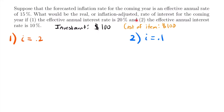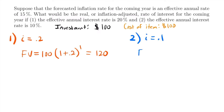We'll first accumulate interest on our investment in each case. For the 20% interest rate, the future value is $100 × (1 + 0.2)¹ = $100 × 1.2 = $120. For the 10% interest rate, the future value is $100 × (1 + 0.1)¹ = $100 × 1.1 = $110. So at the end of one year, the 20% account gives us $120 and the 10% account gives us $110.